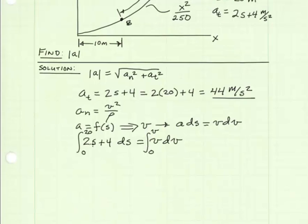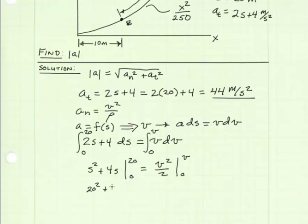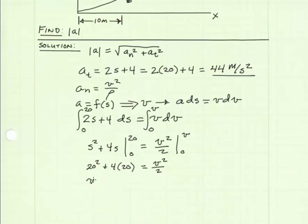The 2s term integrates to 2s squared over 2, so we can cancel the 2's. We have s squared plus 4s evaluated from 0 to 20, equal to velocity squared over 2 evaluated from 0 to V. Plugging these values in, 20 squared plus 4 times 20 equals velocity squared over 2. So our velocity is equal to the square root of 2 times 480, which equals 30.98 meters per second.